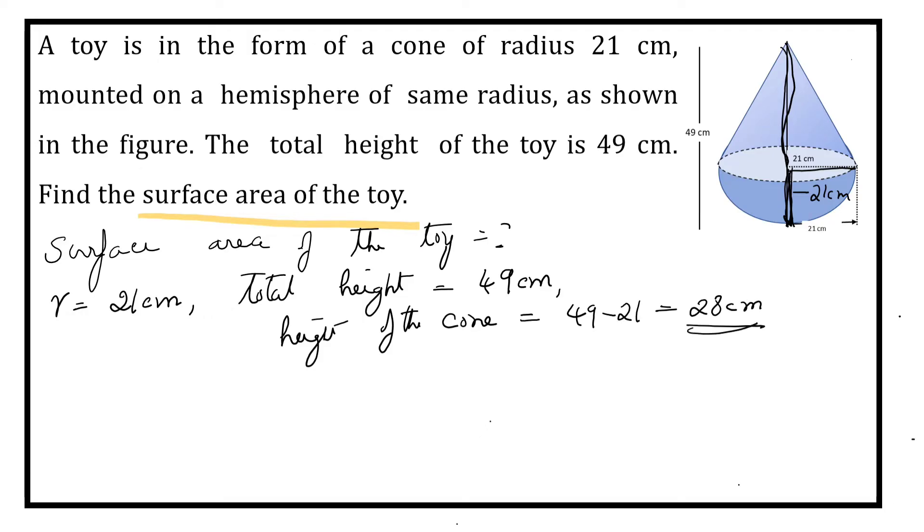We know that we need curved surface area of the cone. So curved surface area of the cone is equal to πRL. So we need slant height, that is L.